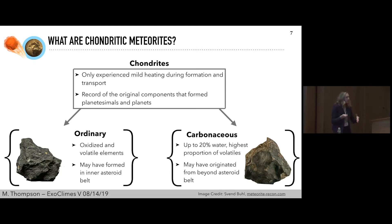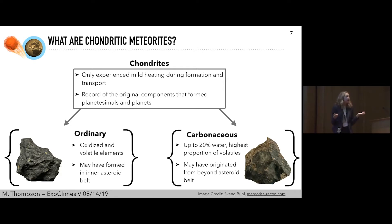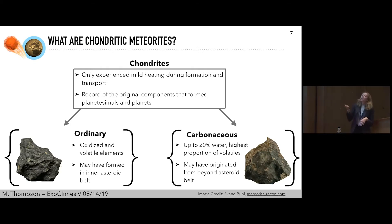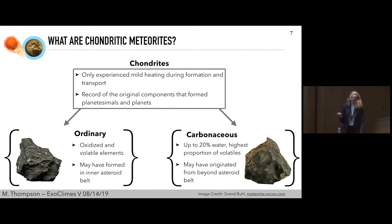Among chondrites there are other sub-types as well, and I'm focusing on two. Ordinary chondrites, as the name suggests, are the most common type we find on Earth. They contain oxidized and volatile elements and may have formed in the inner asteroid belt, though this is an active area of research. The second type are carbonaceous chondrites, which have up to 20% water, the highest proportion of volatiles out of the other chondrite groups, and are believed to have originated from further beyond the asteroid belt.